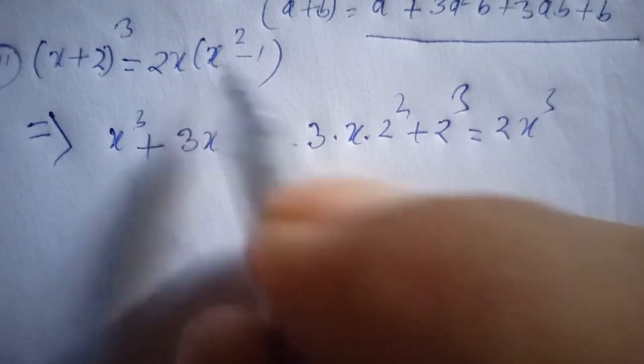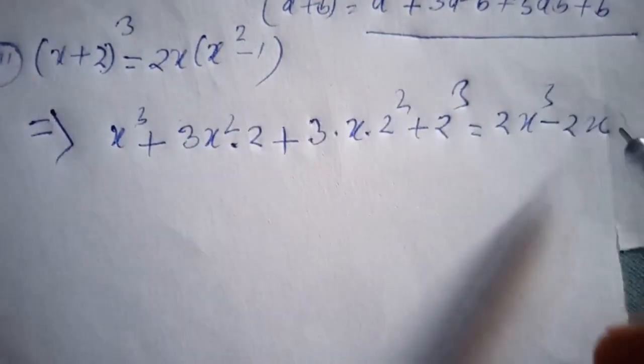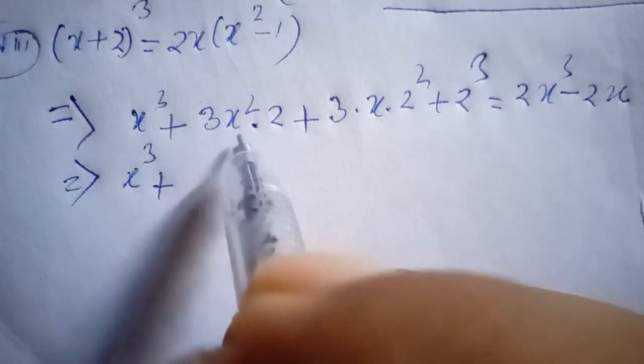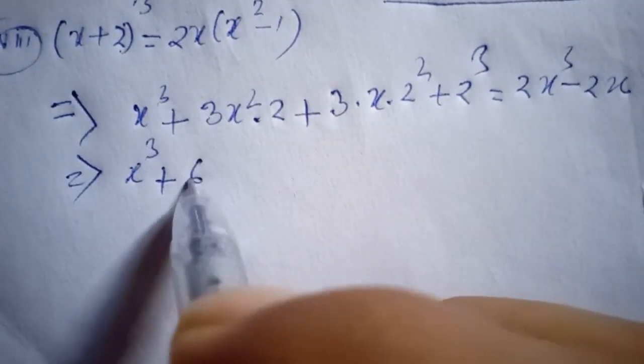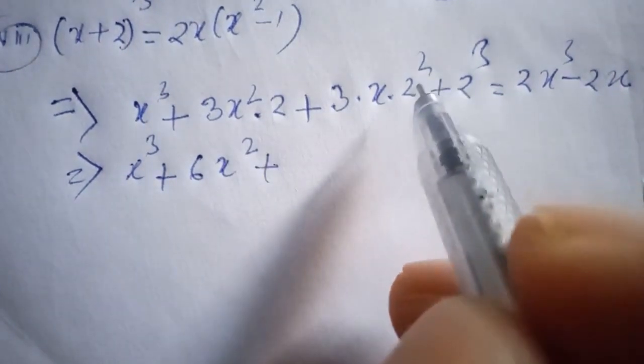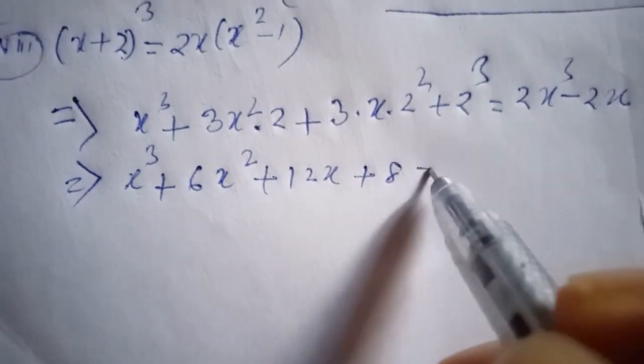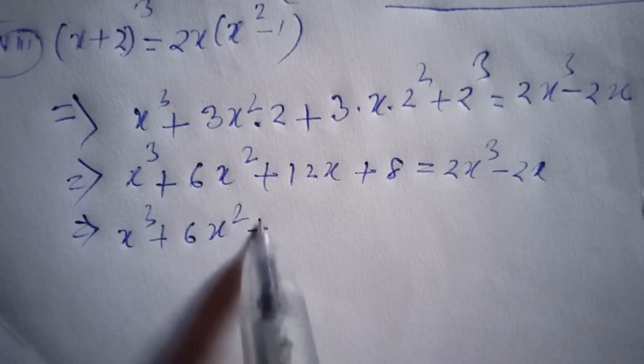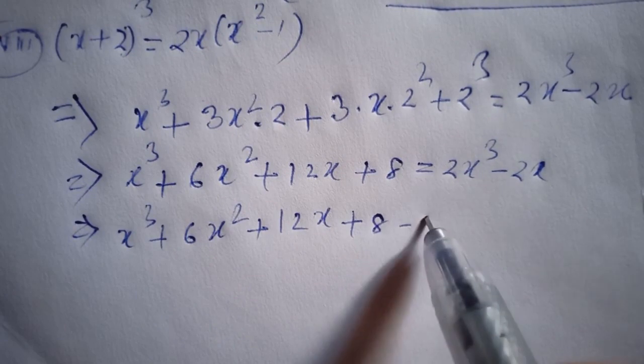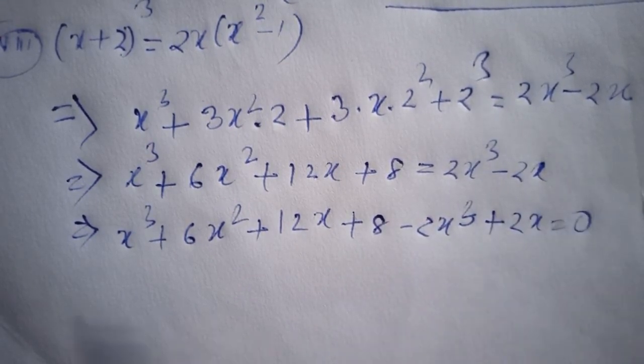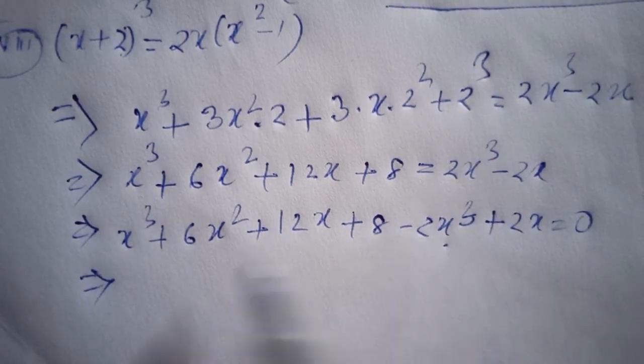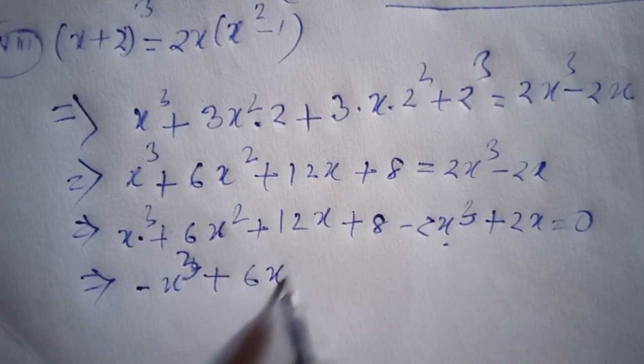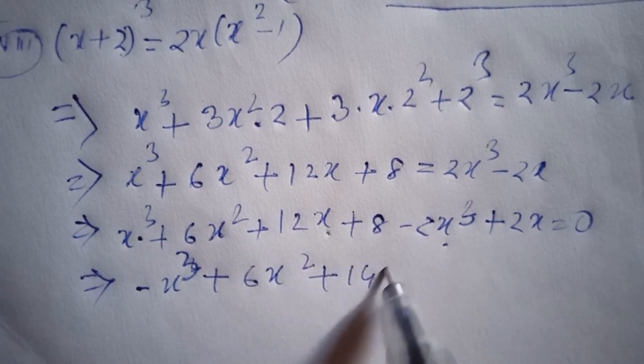This equals x cubed plus 6x squared plus 12x plus 8. The original equation has this equal to 2x cubed minus 2x. So x cubed plus 6x squared plus 12x plus 8 equals 2x cubed minus 2x. Moving everything to one side.